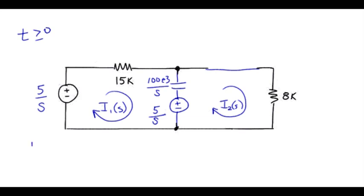At this point, we proceed to a standard mesh analysis. I'll start with mesh 1. Starting in the lower left corner, we have minus 5 over S plus 15K times I1 of S plus the capacitor impedance, which is 100 times 10 to the third divided by S. Then we've got mesh current 1 heading this way and I2 heading in the other direction, so we subtract that.